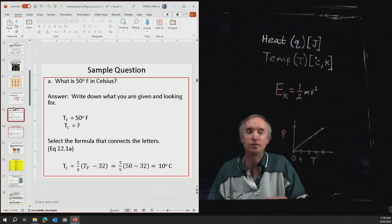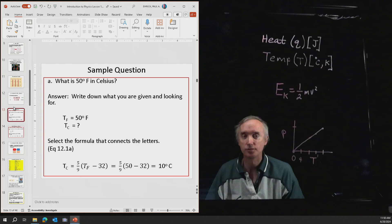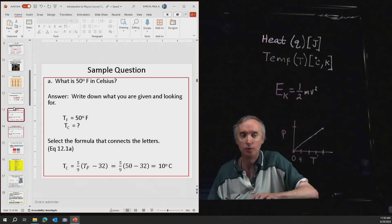Here's an example of how to use the formulas. Write down what we're going to want to go from 50 degrees Fahrenheit, and we want to know what is that in degrees Celsius. Write down what you're given and what you're looking for. The temperature in Fahrenheit is 50 degrees Fahrenheit, and then we want to go to degrees Celsius. So now we need to find which equation do we want to use.